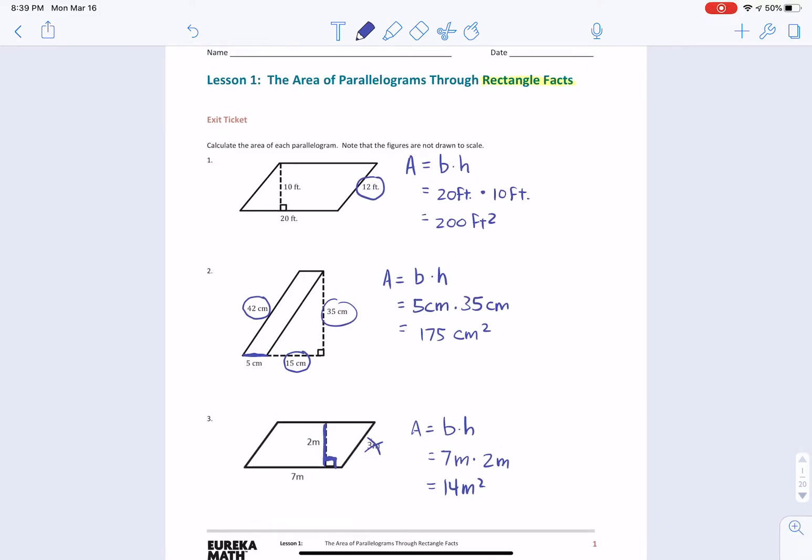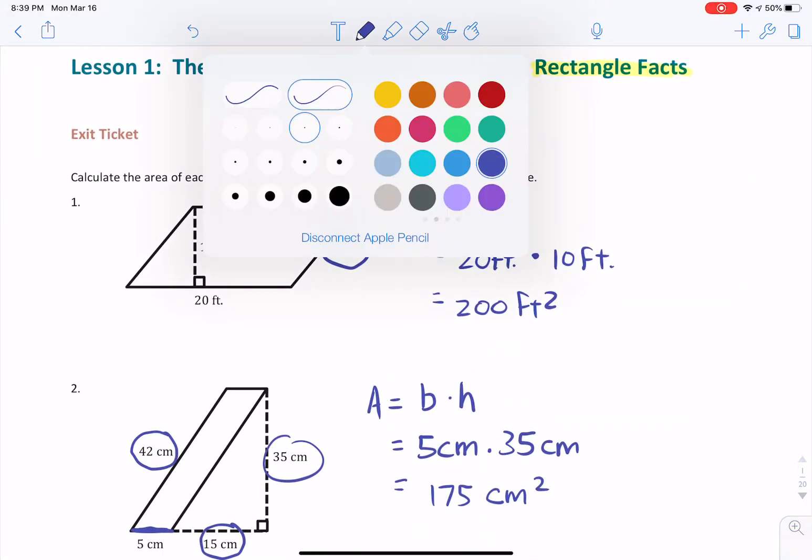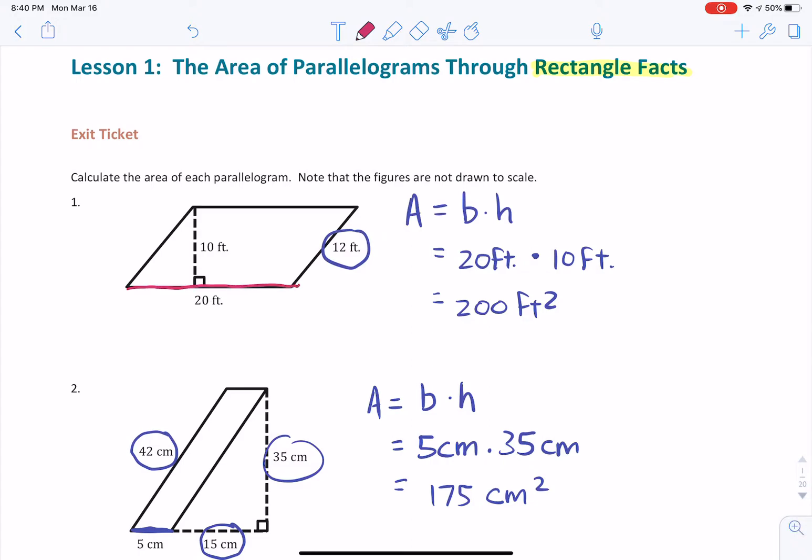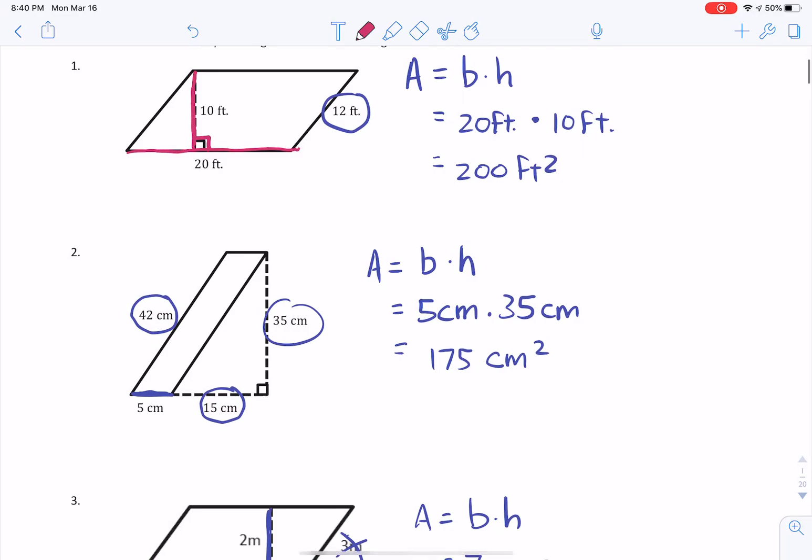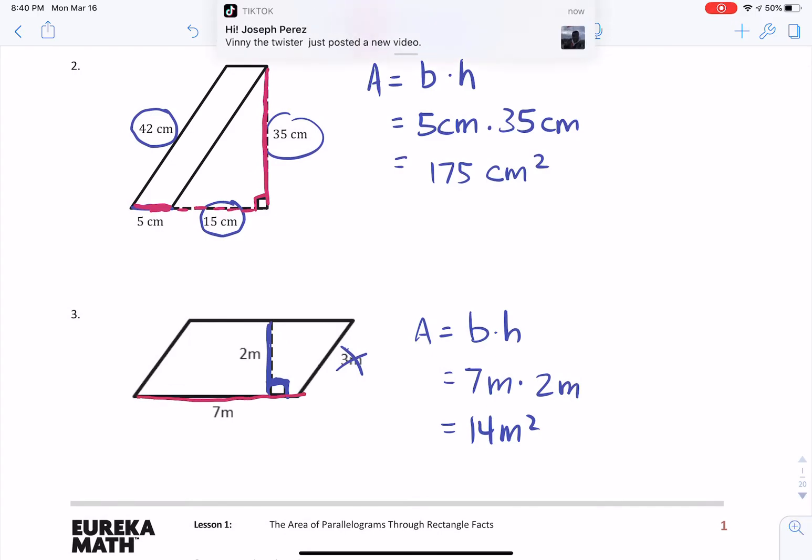Lesson one, the area of parallelograms through rectangle facts. Most important thing is to identify what is the base and what is the height. Do not be fooled. The height is not going to be the side of the parallelogram. The height is going to be perpendicular to the base. Right here is the base, and right here it is perpendicular, 90 degree angle. Right here is the base, and even though it's not touching the base, if we extended it, it is perpendicular. That is my height. If this is the base, then this is the height.